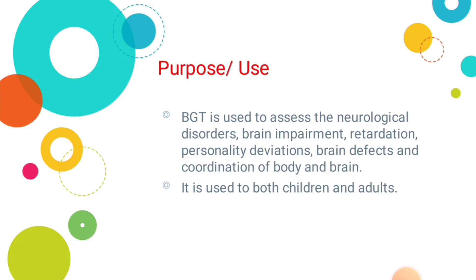If an individual has any impairment, defect, or damage in the brain, and some functioning is disturbed because of it, we can assess that through BGT. If someone's personality has deviated, that can also be assessed. Additionally, how is the coordination between body and brain — whether brain messages are transmitting correctly to the body, how the body muscles are functioning, how brain and body communicate — all of this can be assessed through BGT.